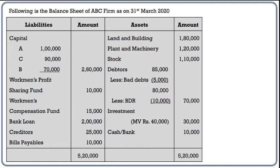Following is the balance sheet of ABC firm as on 31st March 2020. On the liabilities side, we have Capital A, B and C; Workman's Profit Sharing Fund 10,000; Workman's Compensation Fund 15,000; Bank Loan 2 lakh; Creditors 25,000; Bills Payable 10,000. On the assets side, we have Land and Building, Plant and Machinery, Stock, Debtors — gross debtors 85,000 less bad debts 5,000 gives 80,000, less bad debt reserve 10,000, so net debtors in the outer column are 70,000. Investment market value given 40,000, outer column 30,000. Cash and Bank 10,000. Total is 5,20,000.